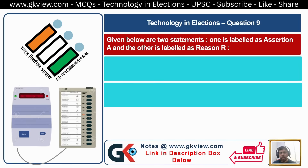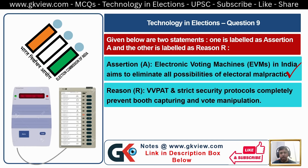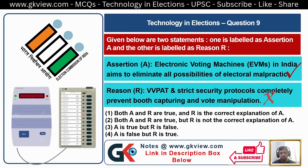Question Number 9. Given below are two statements — Assertion A and Reason R. Assertion A: Electronic Voting Machines in India aim to eliminate all possibilities of electoral malpractice — this is correct. Reason R: VVPAT and strict security protocols completely prevent booth capturing and booth manipulation — this reason is wrong based on practical experience. Where Assertion is true and Reason is false, the answer is option 3.